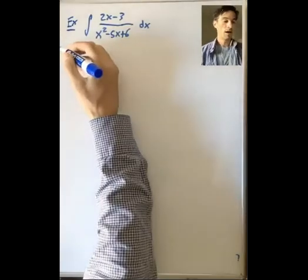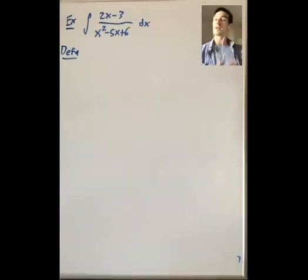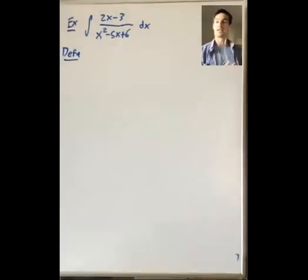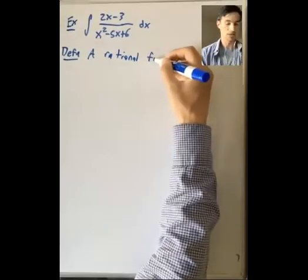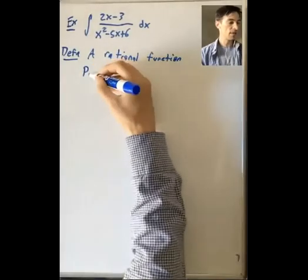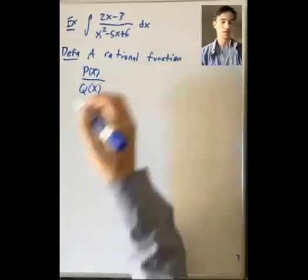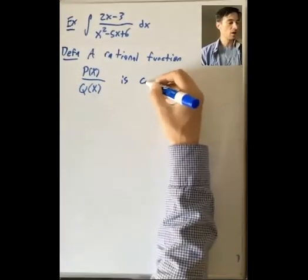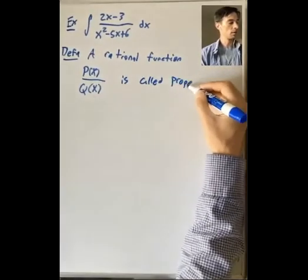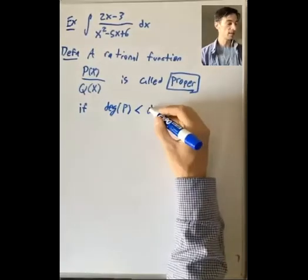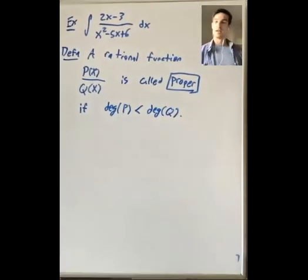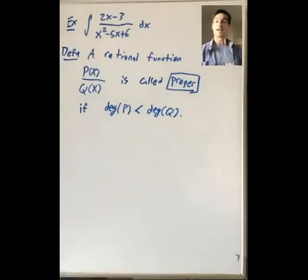Before showing what to do, let me make a definition we'll use throughout the rest of this section. A rational function is a ratio of two polynomial functions — we can write it as p of x divided by q of x, where both are polynomials. This is called proper if the degree of p is less than the degree of q. In the first few videos, we'll talk about how to integrate proper rational functions. In the last video, we'll cover what extra step you need if your rational function is not proper.